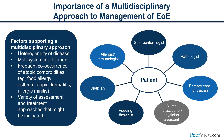What's the importance of a multidisciplinary approach to the management of eosinophilic esophagitis? There are a number of features that support it: it's a heterogeneous disease with multi-system involvement, a frequent co-occurrence of atopic conditions, and patients need a variety of assessments and treatment approaches. You need an allergist, immunologist, gastroenterologist, and pathologist to read the slides. They need a dietician to help with dietary therapies, a feeding therapist particularly for children, nurse practitioners and physician assistants, and a primary care physician to coordinate their other issues as well.